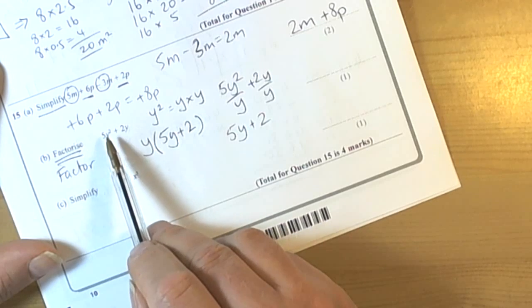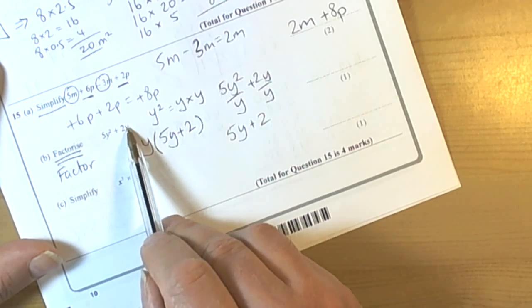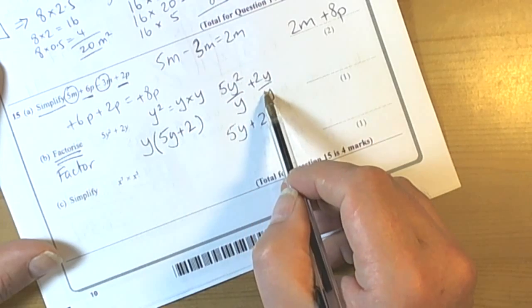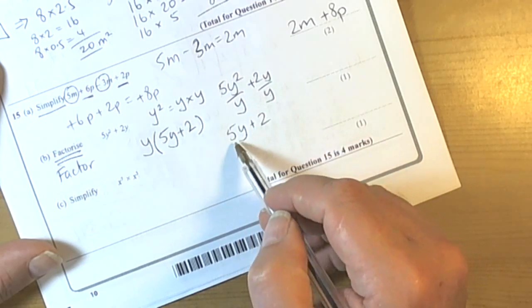Looking at these two terms, the only factor that we can see is Y, which goes into both of these. So if we divide the expression by the common factor, what's left goes inside.